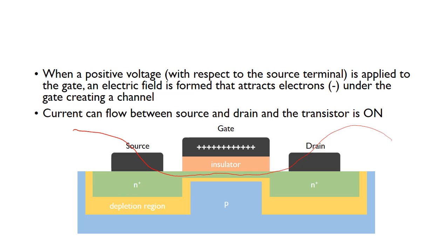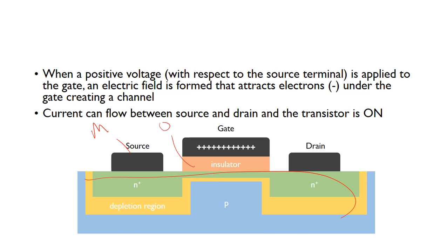The gate, drain, and source are metal contacts — that's where the M in MOSFET comes from: metal. The insulator is an oxide layer, so that's the O. And then all this part is a semiconductor. So this is where MOS comes from in MOSFET — metal oxide semiconductor field effect transistor.